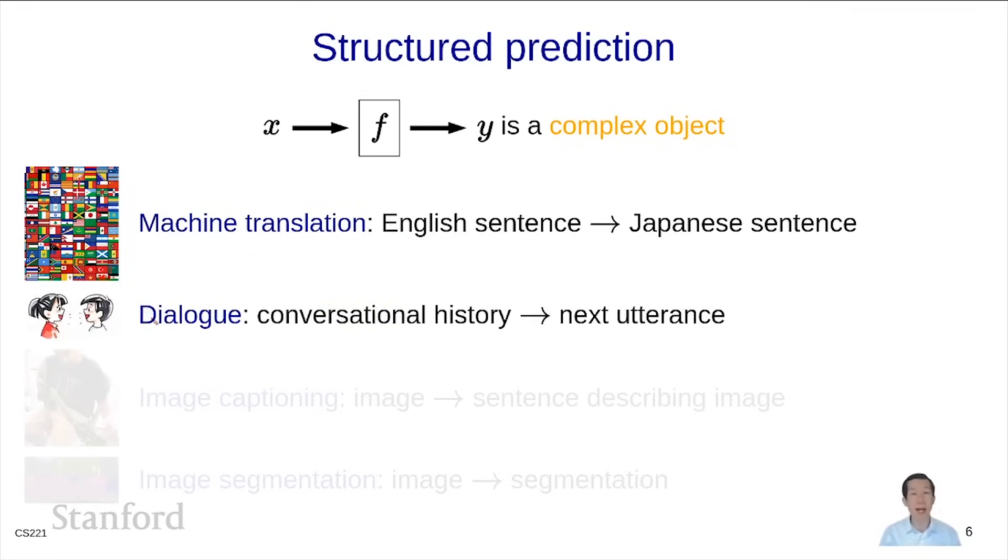Dialogue can also be cast as structured prediction. You're given a conversational history between a user and an agent, for example in a virtual assistant setting, and you're trying to predict y, which is the next utterance that the agent should say.